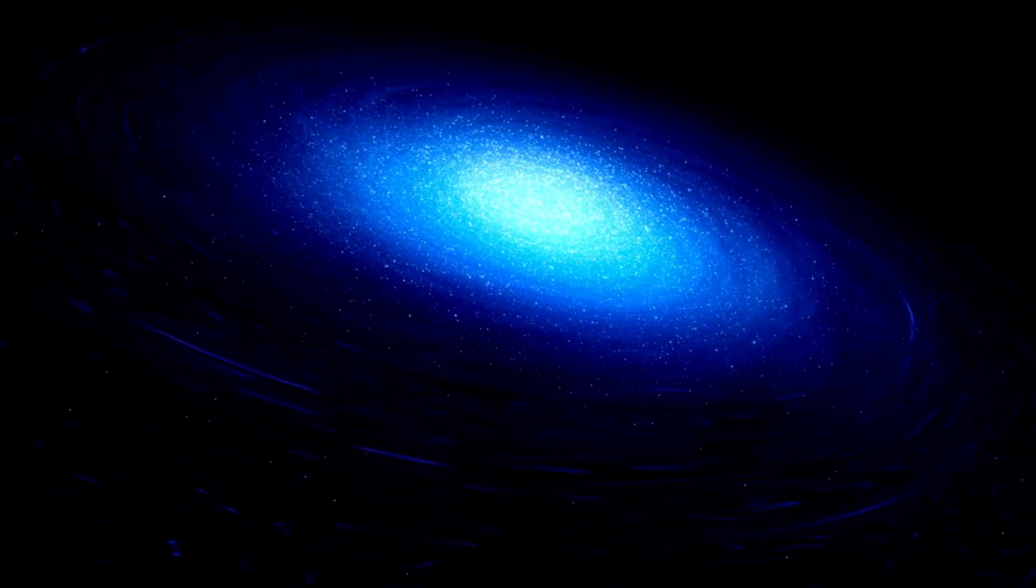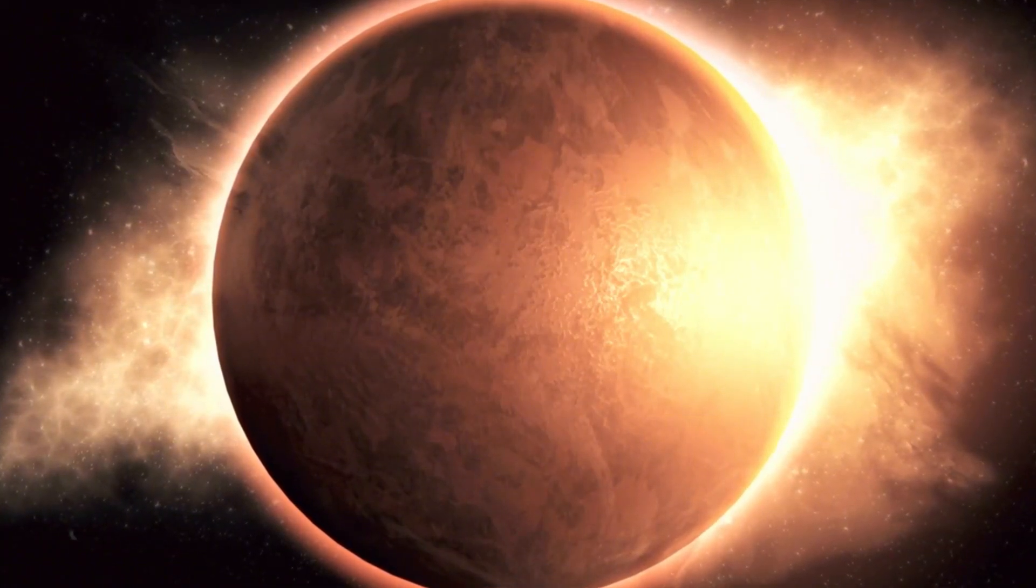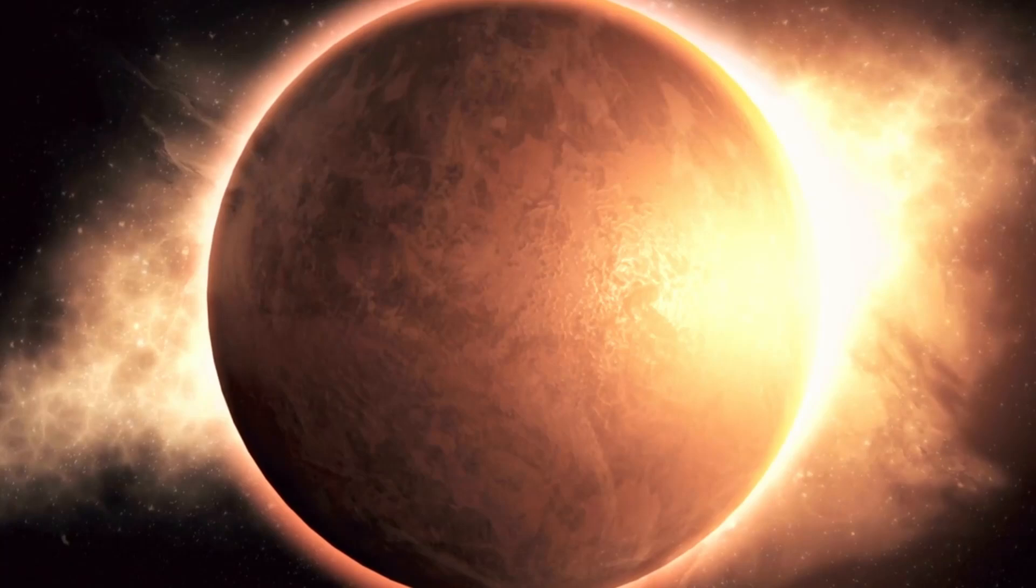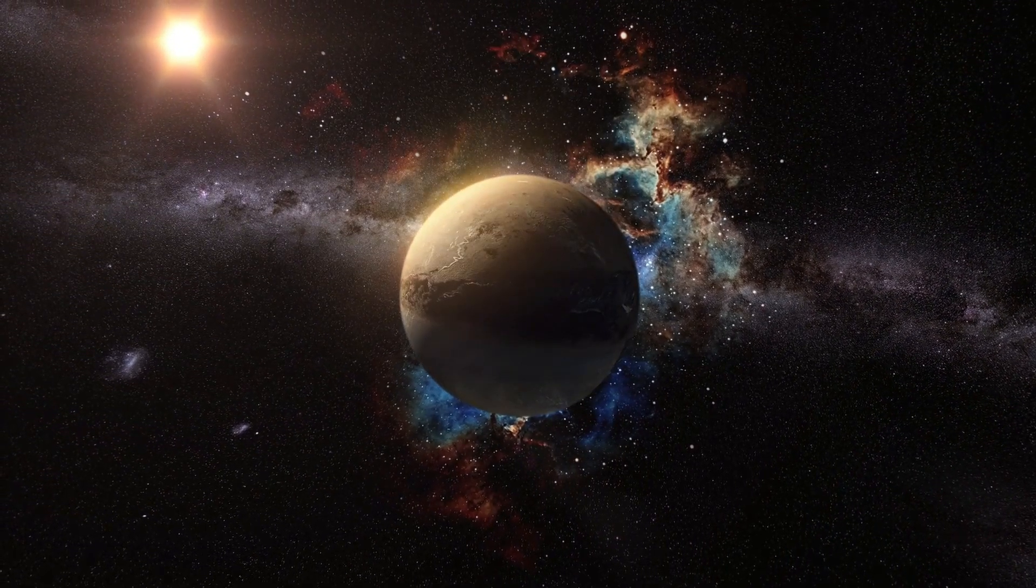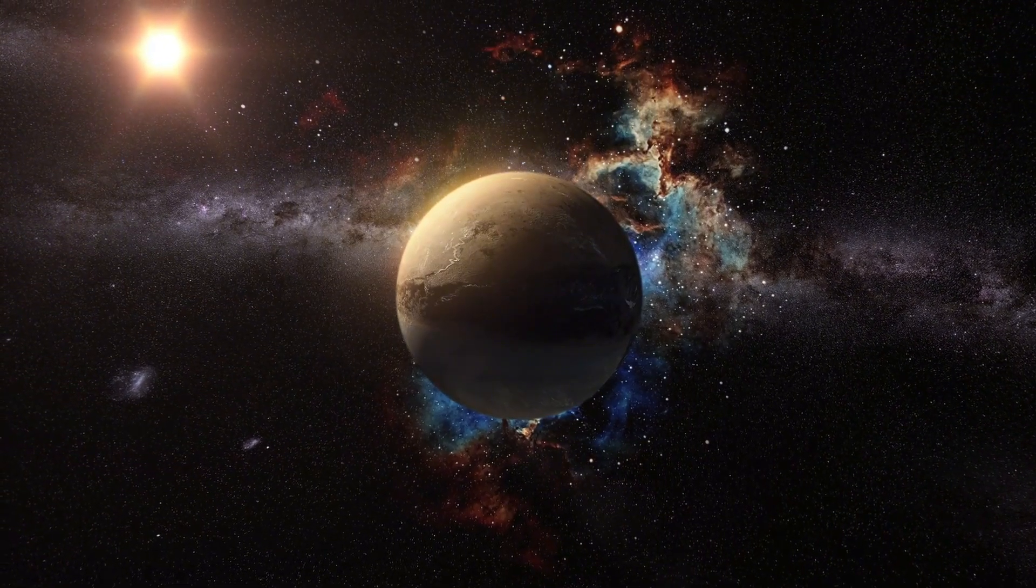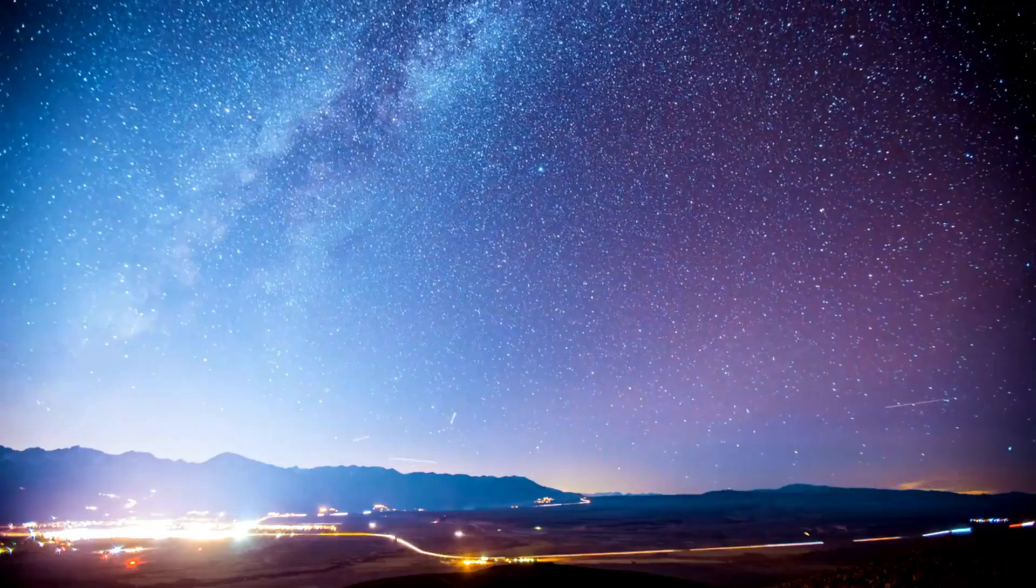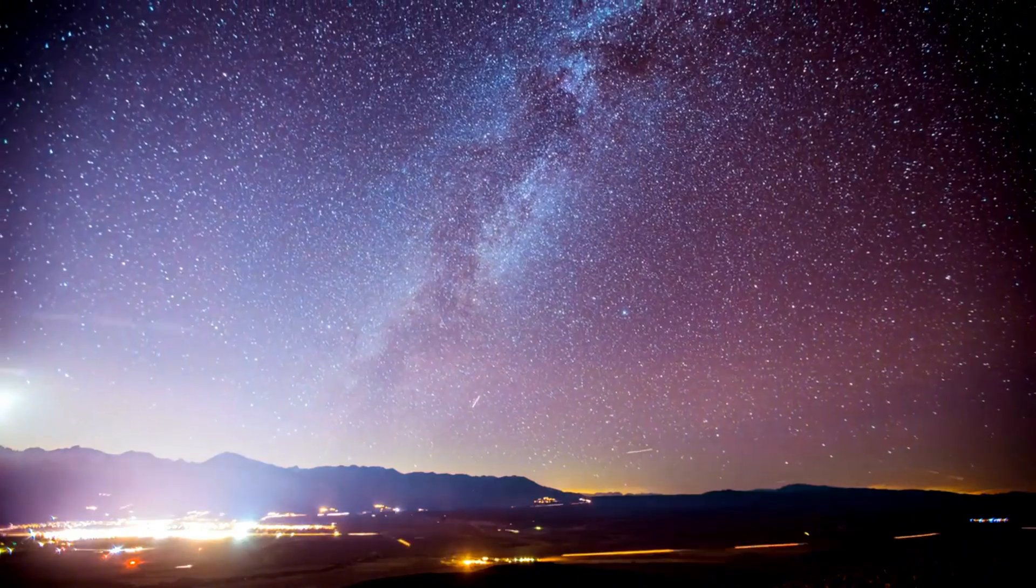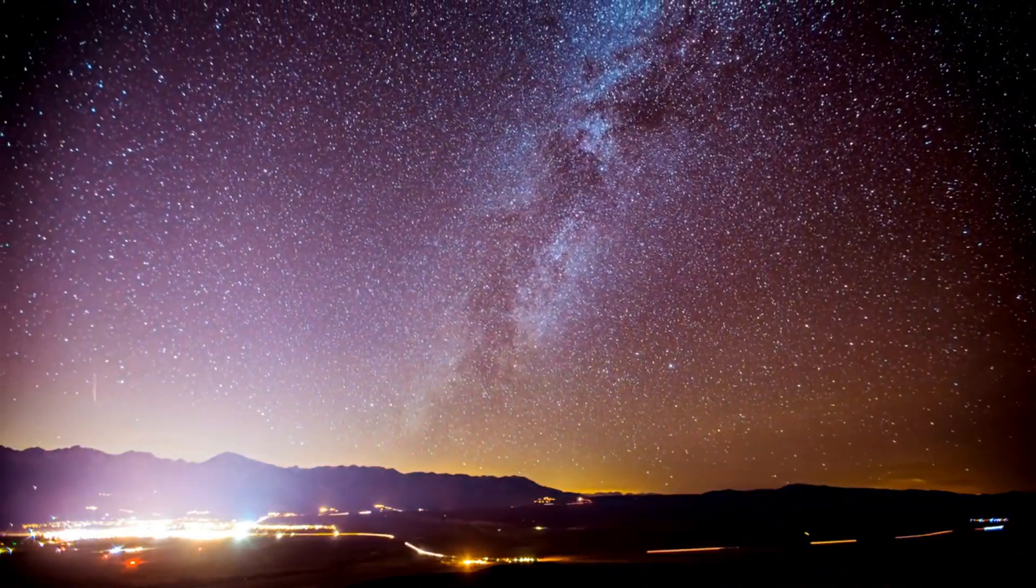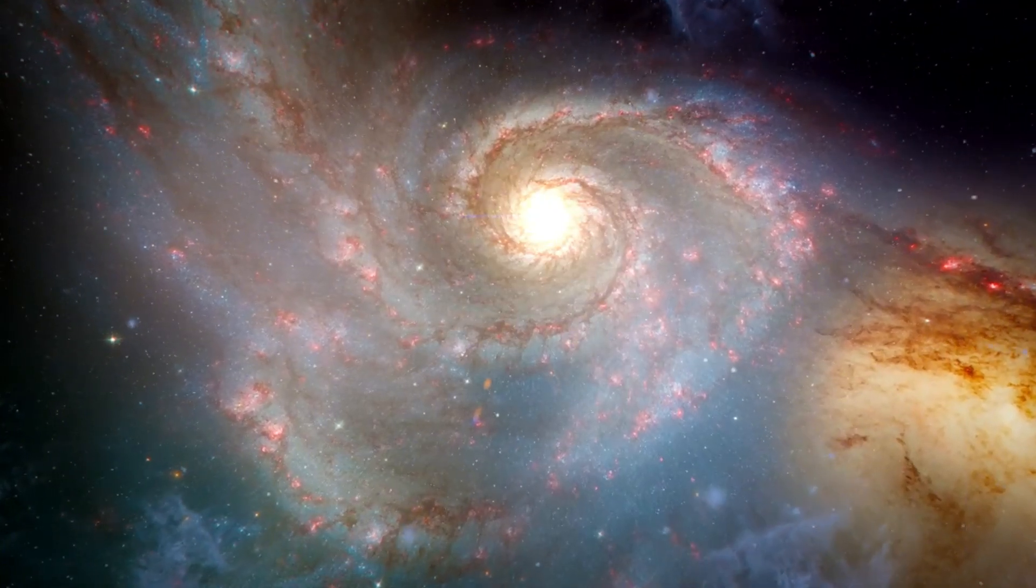But could we ever travel to Proxima b? It's the closest exoplanet to us, which makes it an intriguing possibility. It's almost like exploring our own backyard. Even more interesting is the fact that it's nearly the same size as Earth. This position in the habitable zone suggests it could indeed have conditions suitable for life. Proxima b's proximity also makes it a practical target for our search for life beyond Earth. At just 4.2 light years away, it's an ideal candidate for interstellar missions.